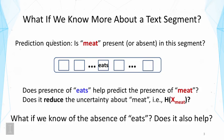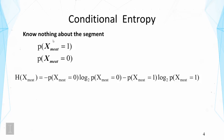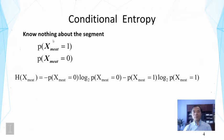These questions can be addressed by using another concept called conditional entropy. To explain this concept, let's first look at the scenario we had before, where we know nothing about the segment. We have probabilities indicating whether a word like 'meat' occurs or doesn't occur in the segment.